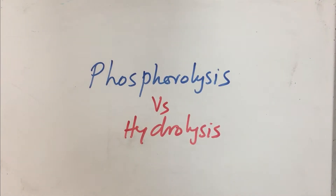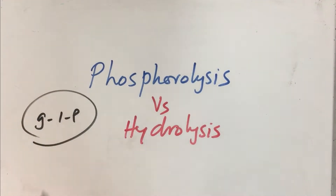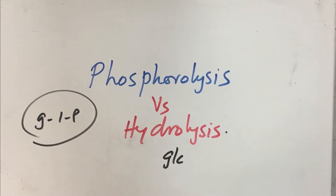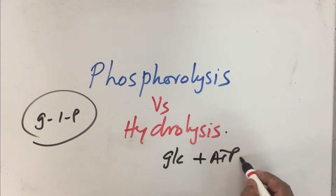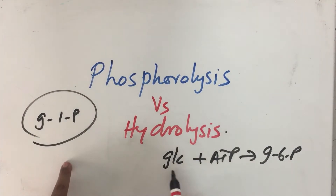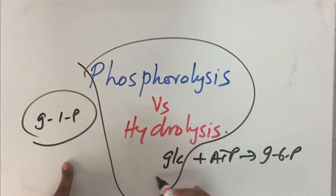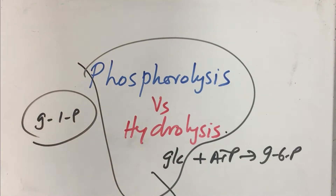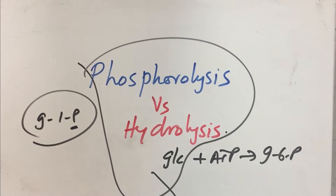Phosphorolysis has an important advantage: the end product produced is glucose-1-phosphate, not glucose. If it were hydrolysis, glucose would be formed in the cell, and we would need to spend an ATP to make it glucose-6-phosphate; otherwise glucose would simply move out of the cell. With phosphorolysis, the end product is already phosphorylated. Phosphorylated intermediates are ionized and cannot pass through the plasma membrane, so the cell does not have to invest energy in retaining the molecule.